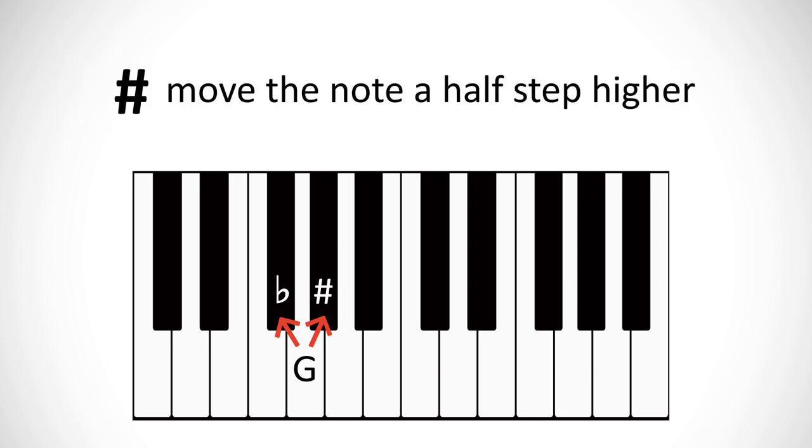The sharp symbol tells you to move one half step higher than the note's letter named location. So if you have an F sharp notated, find the F key, then go to the next key higher. On the piano, this means to the right, and that black key is F sharp in that context.